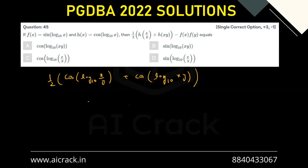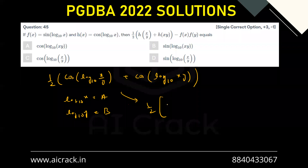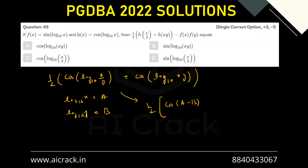Let's simplify this by letting a = log₁₀x and b = log₁₀y. Using log properties, log₁₀(x/y) = log₁₀x − log₁₀y = a − b, so the first term becomes cos(a − b). And log₁₀(xy) = log₁₀x + log₁₀y = a + b, so the second term becomes cos(a + b).